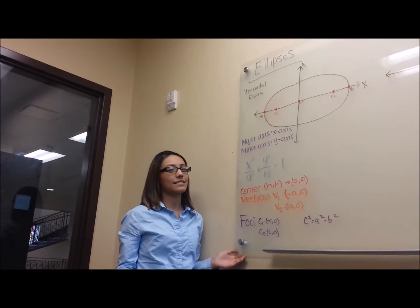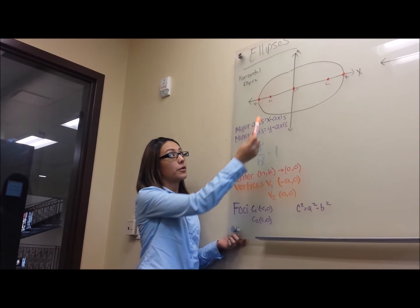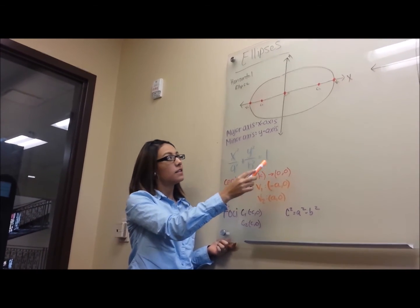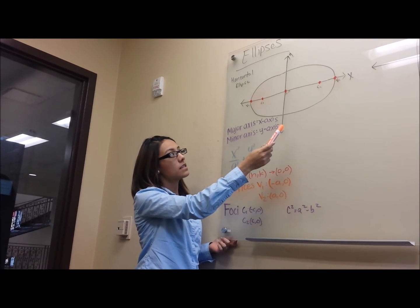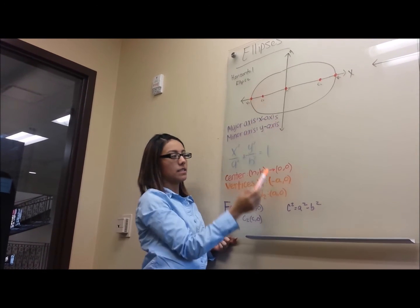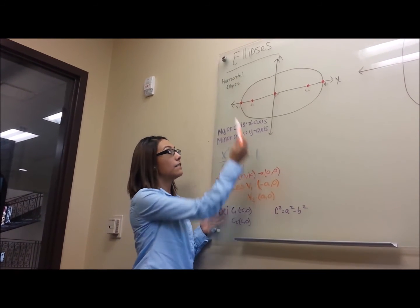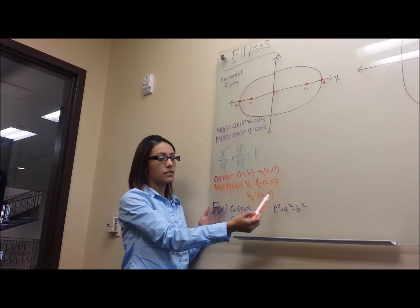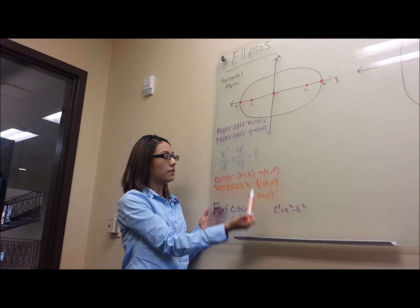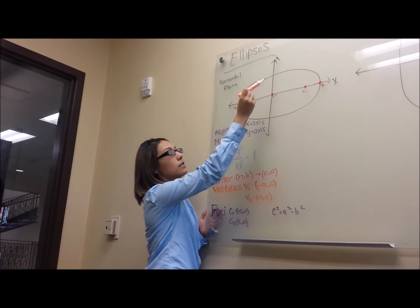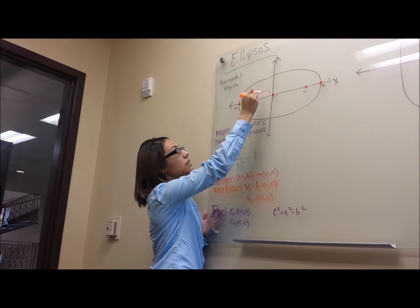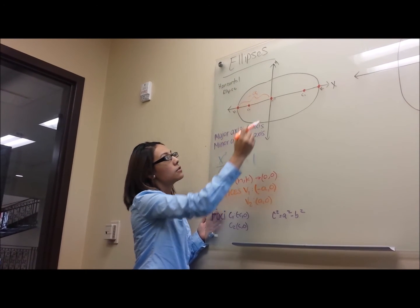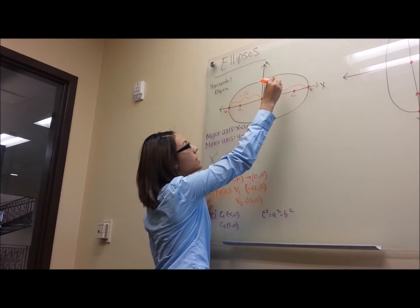This is the horizontal ellipse equation: x squared over a squared plus y squared over b squared equals 1. This information here represents our critical points. The center is classified as h, k. In this case, our horizontal ellipse is centered at the origin, so it makes it 0, 0. Vertices: we have v1 and v2, which are classified as negative a, 0 and a, 0. The 'a' value you get from the equation, which means that is the distance from the center to the vertex.